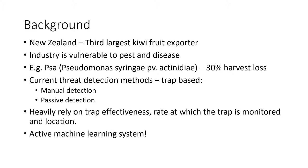Current detection methods predominantly employ the use of traps to entice pests. There are two types: manual detection, which involves periodically checking the trap, and passive detection, which employs a camera to monitor the traps remotely or using an autonomous smart detection method.